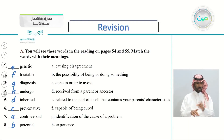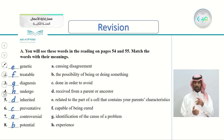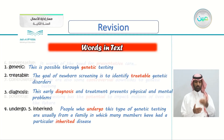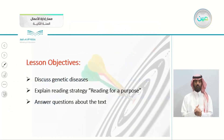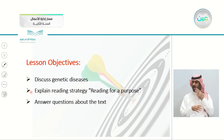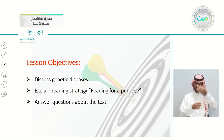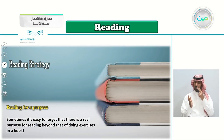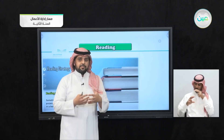The last word is 'potential' — the possibility of being something or the possibility of doing something. We will see these words in the article today. So the objectives are: to discuss genetic diseases, explain the reading strategy of reading for a purpose, and answer questions about the text. Reading for a purpose means to read to find out information about something.